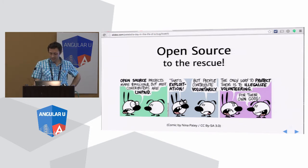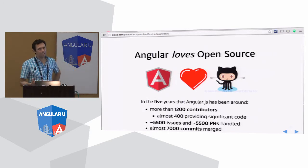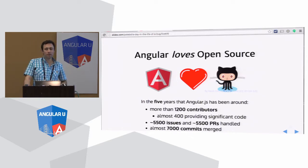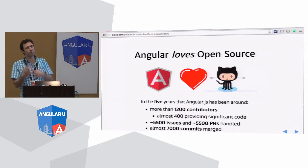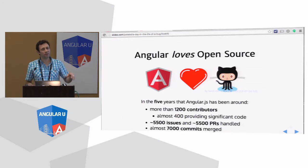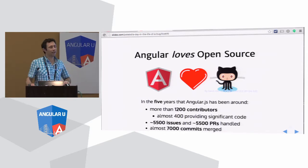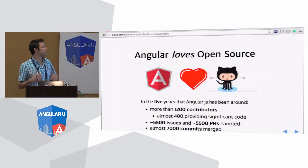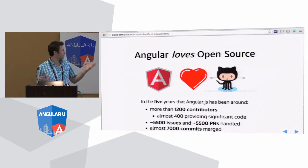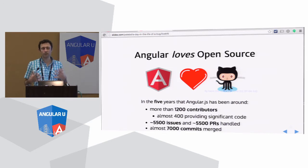And we actively encourage that. Angular loves open source. We've been running for five years now and we've got 1,200 people — different individuals — who've committed to the Angular codebase. This is just Angular 1. If you strip out people who've only done documentation changes, 400 of those people actually provided significant code — either new features or proper bug fixes with unit tests. And we've handled and dealt with 11,000 issues and pull requests. So it's been pretty full-on engagement with the community out there.